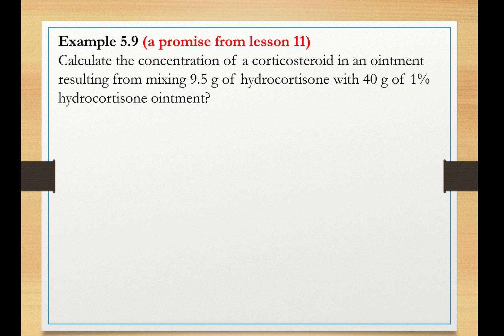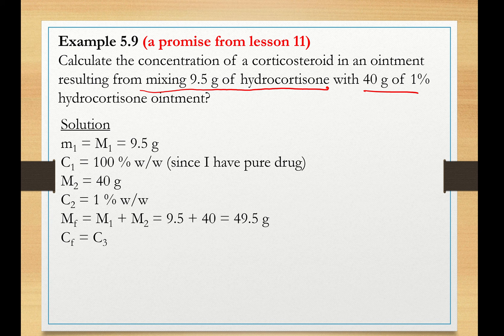Lastly, a promise from lesson 11. Example 5.9 is asking you to calculate the concentration of a corticosteroid in an ointment resulting from mixing 9.5 grams of hydrocortisone, that's the pure drug, with 40 grams of 1% hydrocortisone ointment. So please pay attention now. The mass of the first pure drug, we call it M1, and that's 9.5 grams. I don't have any excipients, but I have pure drug, and the mass of the drug is 9.5 grams. Now, what is the concentration of this powder? Since I don't have any excipients, it's pure drug, that would be 100%. So that's my C1.